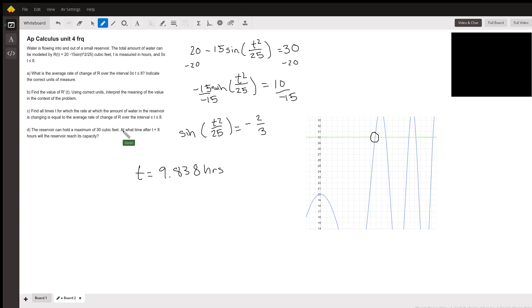But I found out that the T for this is 9.838 hours. And I guess the question asks what time after T equals eight hours? They might want you to subtract eight hours from this and then get a difference of 1.83 hours. This is the time after eight hours that it happens. But talk to your teacher or your professor and make sure that we got the correct answers here.